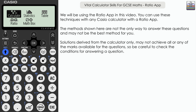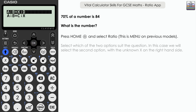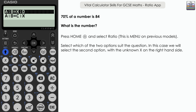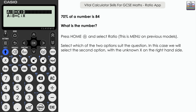The first question: 70% of a number is 84 — what is the number? From the home or menu, select ratio. There are two different options. The left-hand side of the equals sign, where we have A and B, represents the ratio where we know both sides — usually a percentage or fraction linked with an amount. The right-hand side is where we have the unknown part, represented by X, which can appear on either side of the ratio.